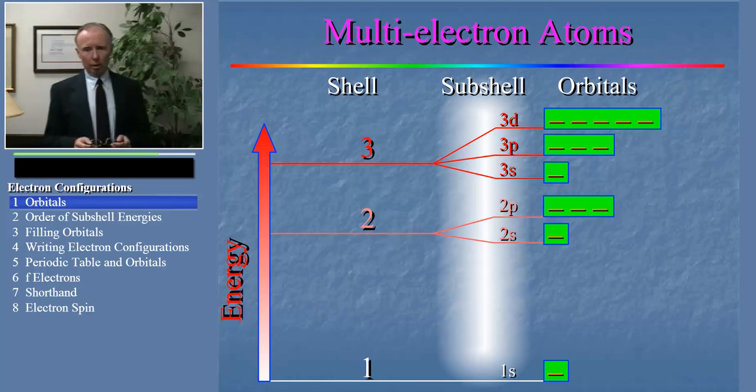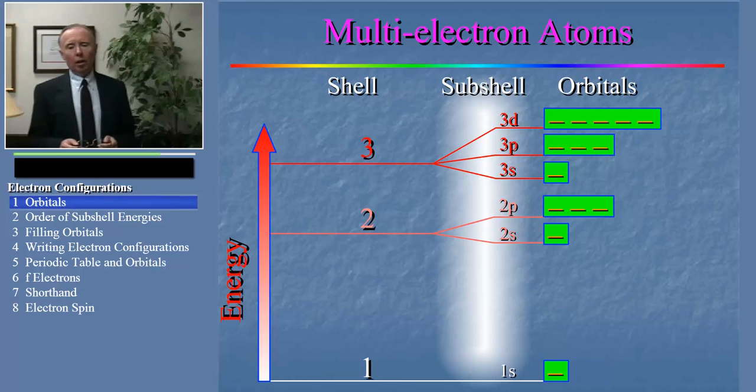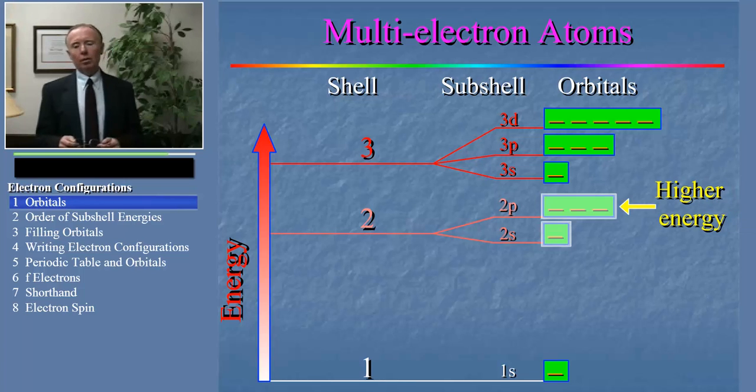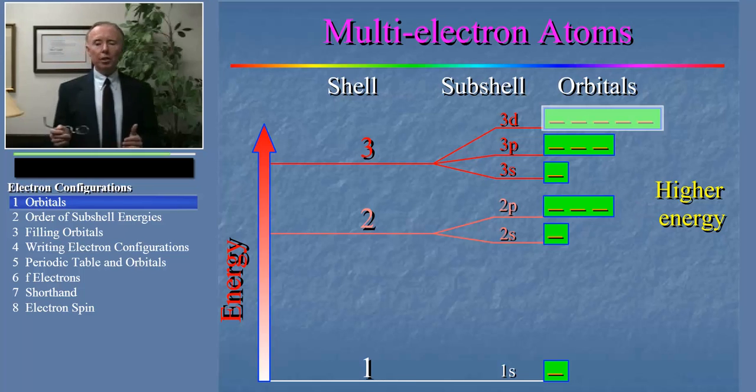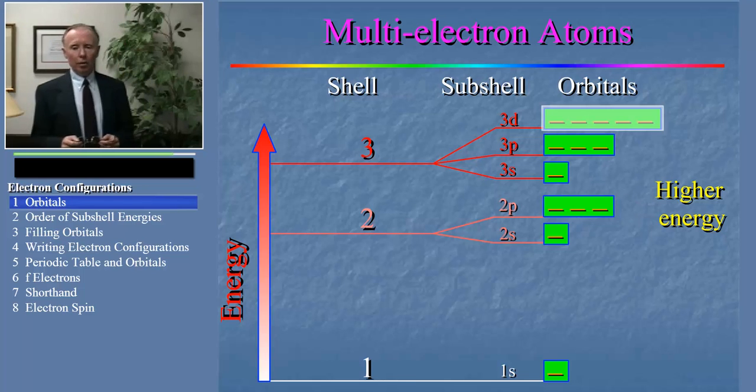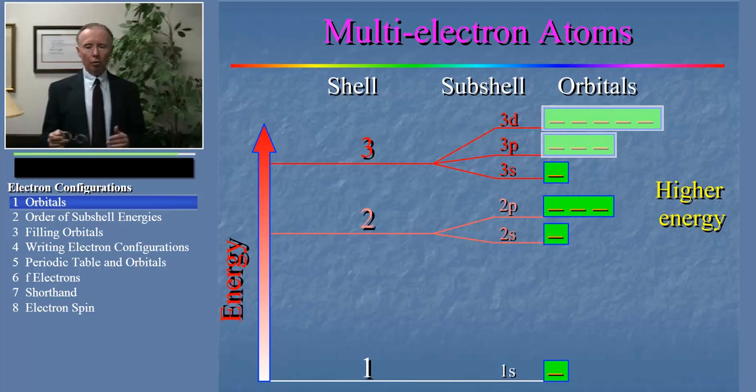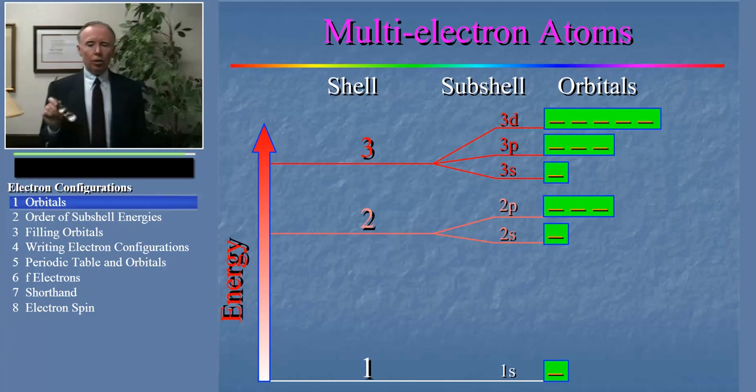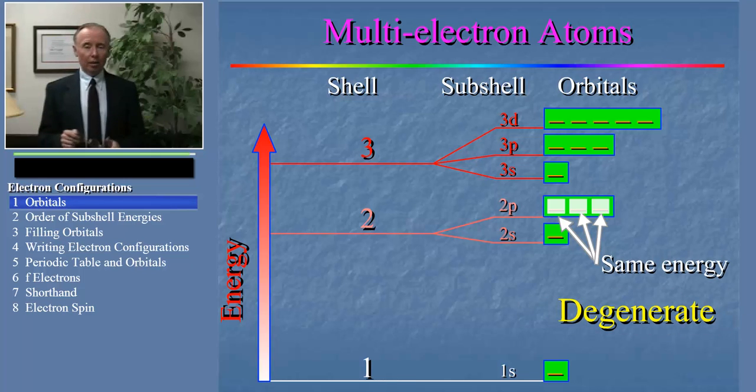However, when we look at the subshells, there's a difference. The set of three 2p orbitals is higher in energy than the 2s orbital. Likewise, the set of five 3d orbitals is higher in energy than the set of three 3p orbitals, which are, in turn, higher than the 3s. Now don't be confused. The orbitals that form a subshell are still the same in energy. We say they are degenerate. That's not meant to be an insult. It's just a technical term.